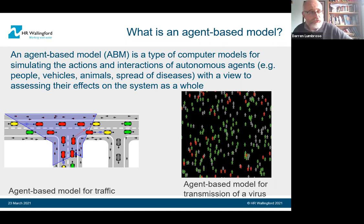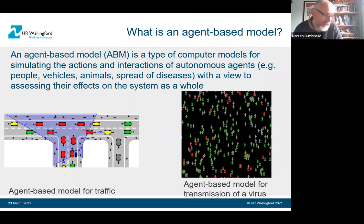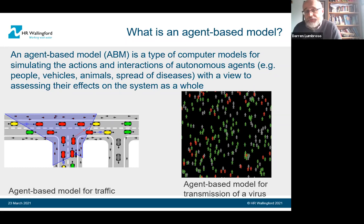Some examples from other fields where agent-based models are used: on the left, a traffic model used in Germany where the agents were cars and cyclists — used to improve junctions for cyclists and assess traffic flow and safety. Also very pertinent is the spread of viruses. Many of the models used for COVID-19 — including those from Professor Ferguson at Imperial College — are agent-based models where the agents are people. You look at how quickly the virus spreads given certain rules, and play with different interventions to reduce spread.